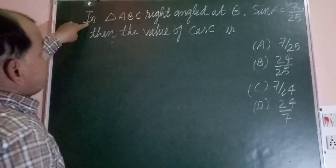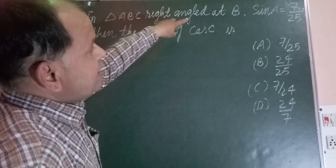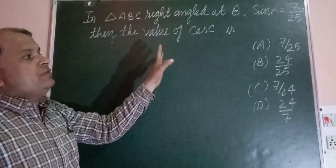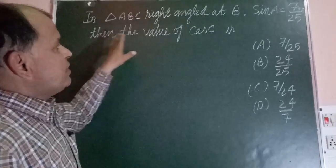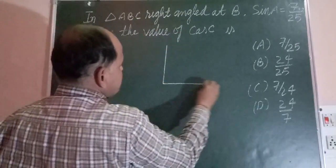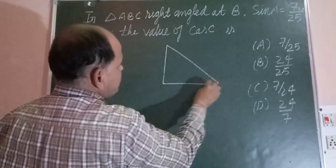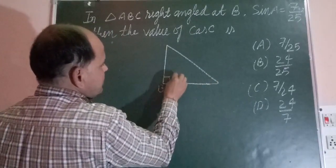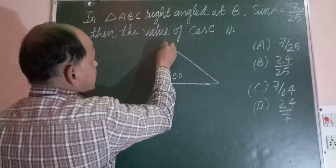In triangle ABC, right-angled at B, sin A is given as 7/25. Find the value of cos C. So the question states that ABC is a right-angled triangle at B, where B is 90 degrees, and we have points A and C.